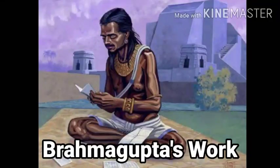Brahmagupta was an Indian mathematician and astronomer. He was born in 598 CE in Bhilamala, that is present-day Bheemwal in Rajasthan. He is the author of two early works on mathematics and astronomy: the Brahmasphuta Siddhanta and the Khanda Khadyaka.